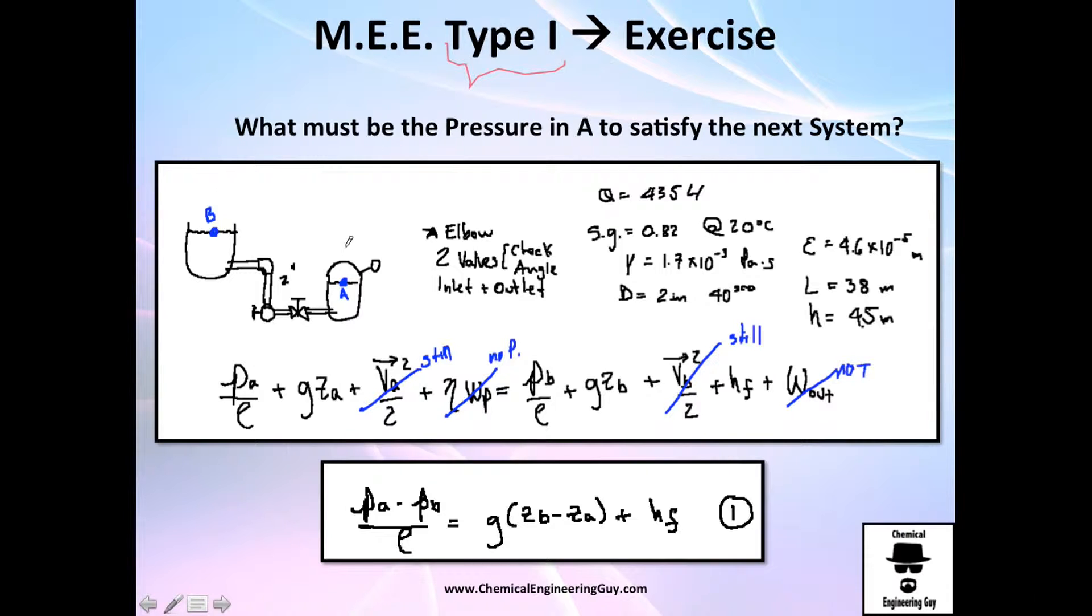What must be the pressure in A to satisfy the next system? As you can see, the flow rate is going to go from A to B. We have one elbow, two valves, one inlet and one outlet. That's for shape or friction shape. We got the volumetric flow rate in liters per minute, specific gravity is given, the viscosity is given.